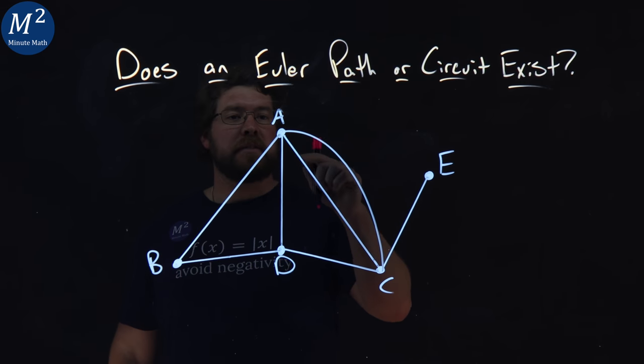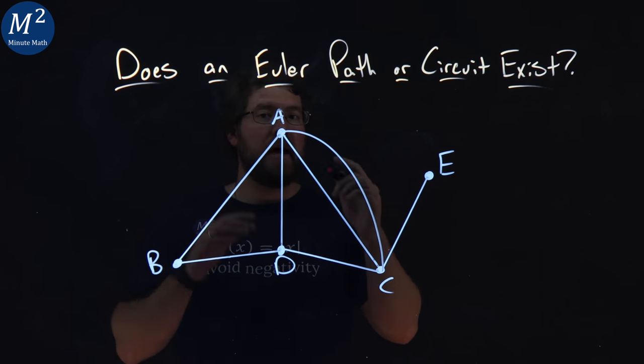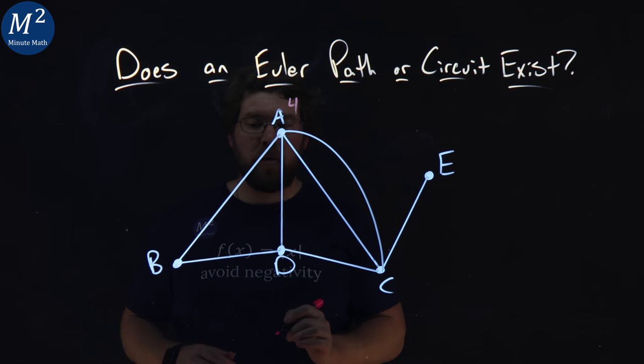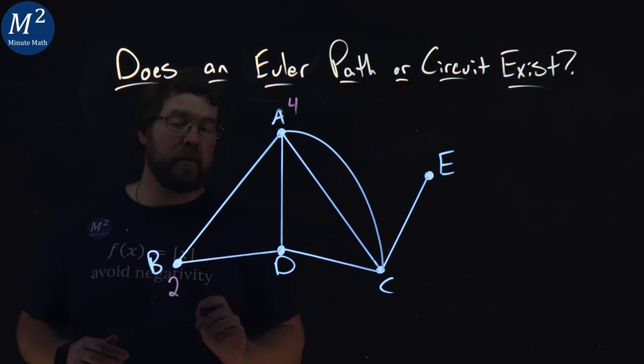We start with A, and we see there are one, two, three, four edges that connect to A, so A is degree four. B has one, two edges, so it's degree two.